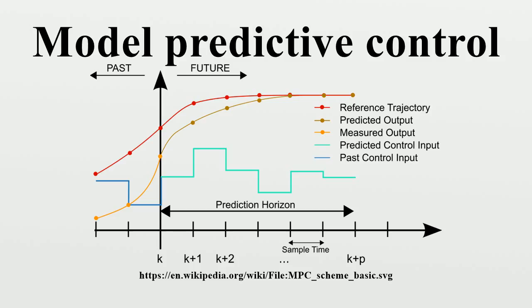When linear models are not sufficiently accurate to represent the real process non-linearities, several approaches can be used. In some cases, the process variables can be transformed before and/or after the linear MPC model to reduce the non-linearity. The process can be controlled with non-linear MPC that uses a non-linear model directly in the control application.